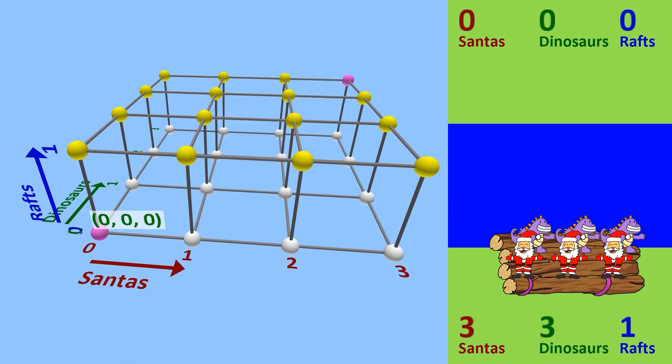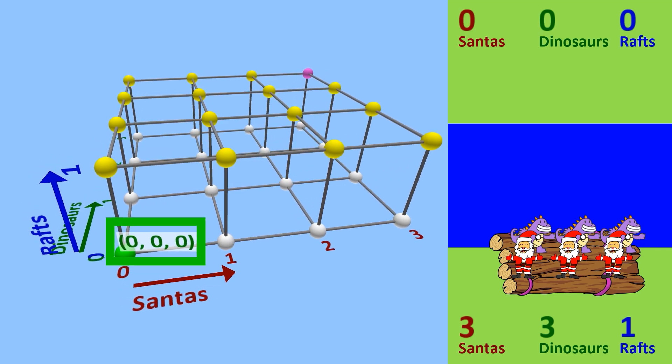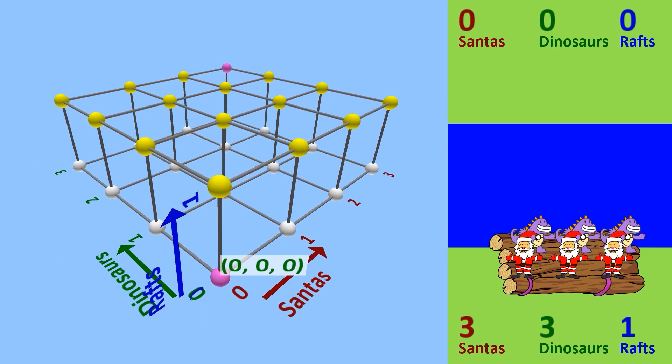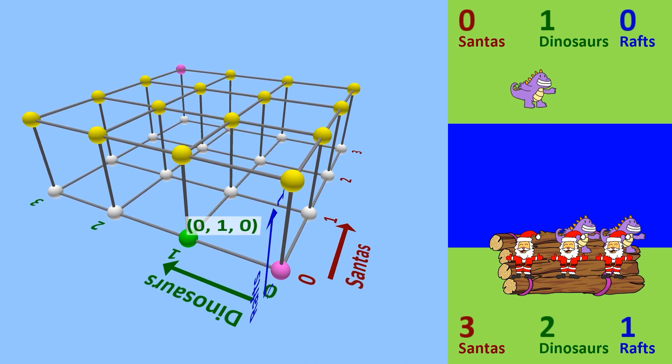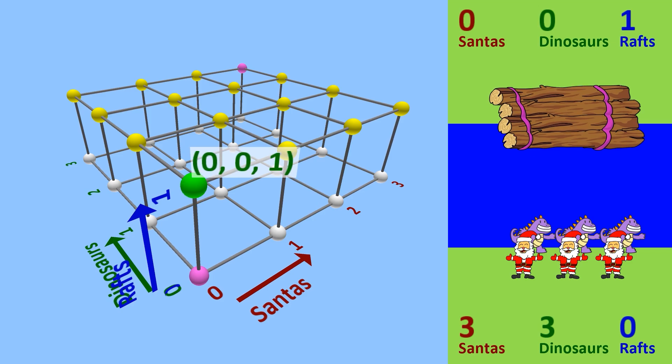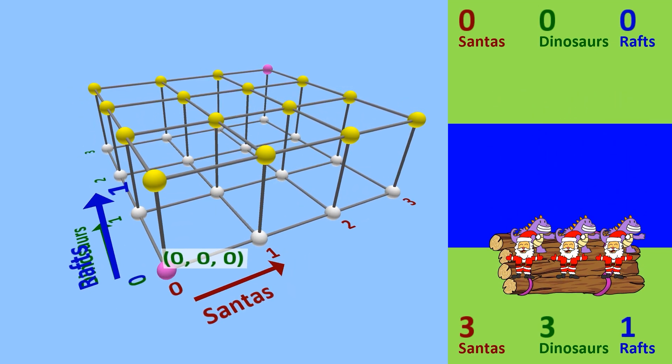Let's graph each variable onto an axis in 3D space. We start at the origin, 0, 0, 0. One Santa crossing the river moves you one unit on the x-axis. One dinosaur crossing the river moves you one unit on the y-axis. And one raft crossing the river moves you one unit in the z-axis. Ignore the legality of these moves right now, I'm just showing you how this space works.